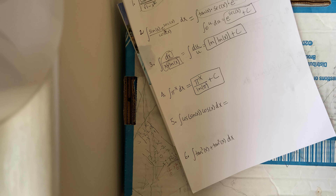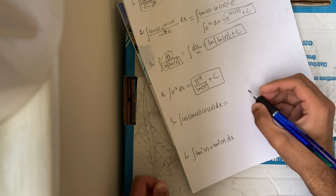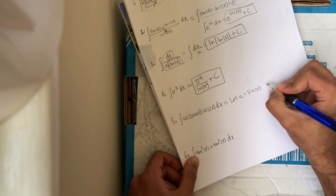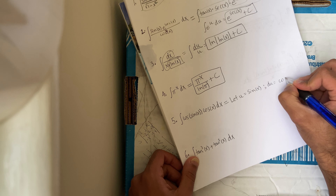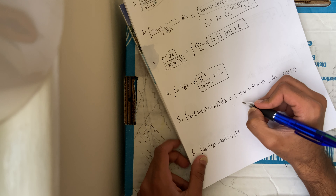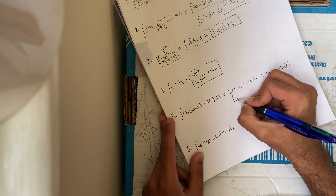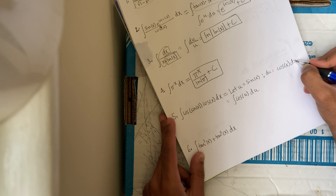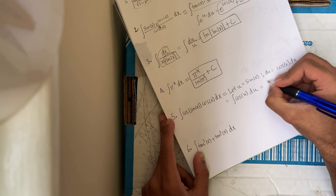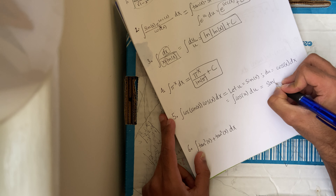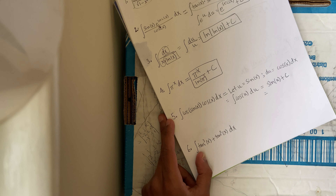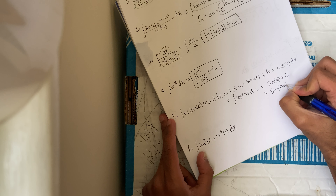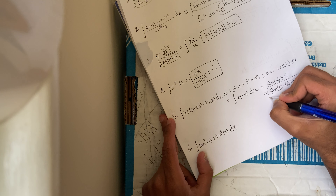Number 5: the cosine of the sine of x times the cosine of x. I can let u equal the sine of x, therefore du is just cosine of x dx. So my new integral would be the integral of cosine of u du, which is just sine of u plus c, which is, in other words, sine of the sine of x plus c. Make sure to put your plus c on.